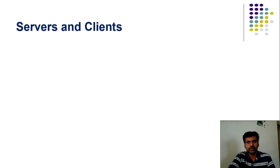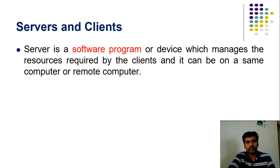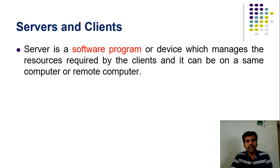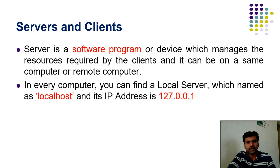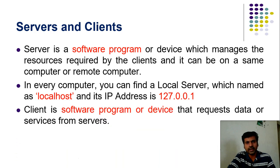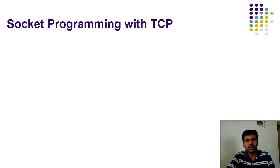Server and clients play an important role in socket programming. A server is a program or device which has the resources or data required by the client. The server can be your local system — you can configure your local system as a server — or it can be a remote computer system. In every computer you can find a local server called localhost, whose IP address is 127.0.0.1. A client is a software program or device which requests data or resources from the server.